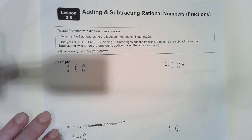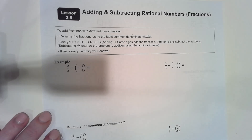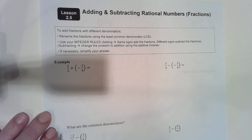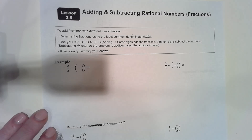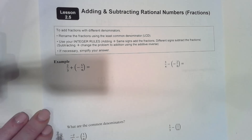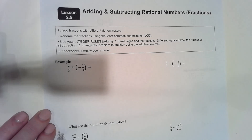We're going to go into our integer rules, because some of these fractions are positive and some are negative. Same signs: add the fractions. Different signs: subtract the fractions. If you're subtracting, we're going to use our leave-change-inverse rule — change the problem to addition and use the additive inverse. If necessary, simplify your answer.